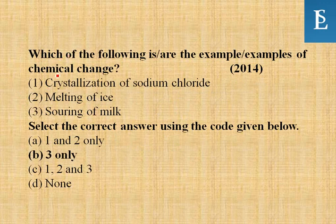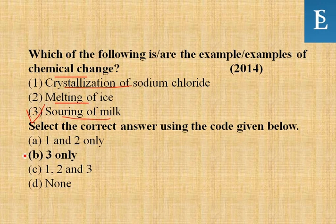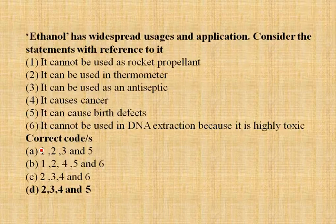Which of the following are examples of chemical change? Crystallization of sodium chloride — no; melting of ice — no; souring of milk — yes. Souring of milk is a chemical change, so option three is correct.